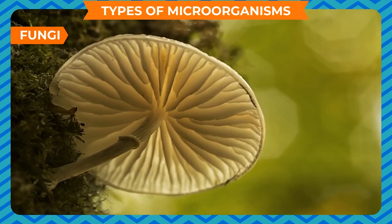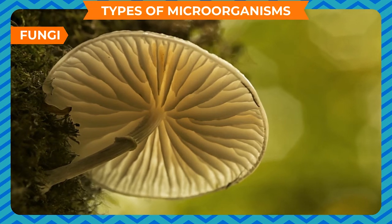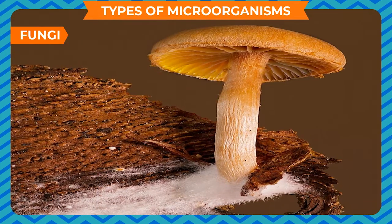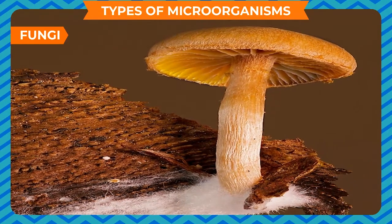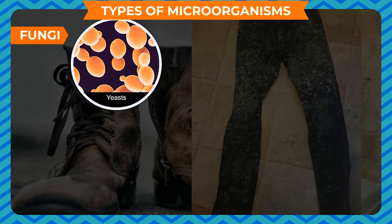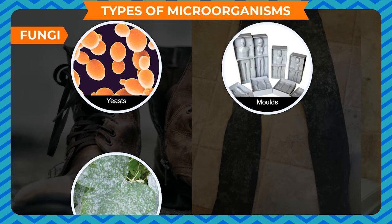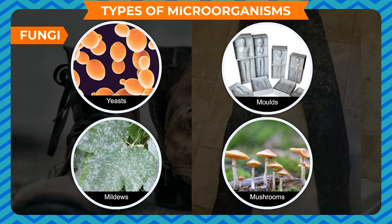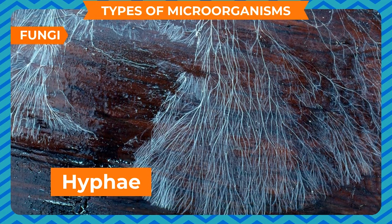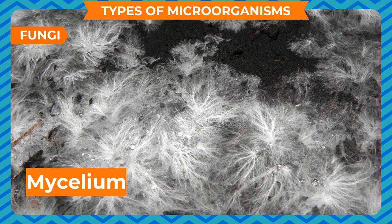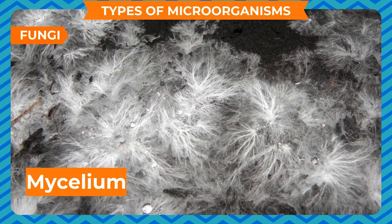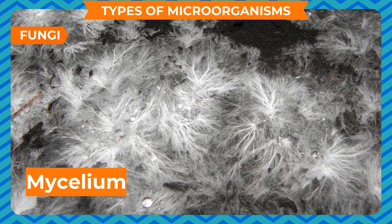Fungi are non-green plants that lack chlorophyll and are not capable of preparing their own food. They grow in damp, dark, and moist places like damp clothes and old shoes. Fungi include yeasts, molds, mildews, and mushrooms. The body of a fungus is made of thread-like thin filaments called hyphae; a mass of hyphae is called mycelium. Some fungi are unicellular while most are multicellular.